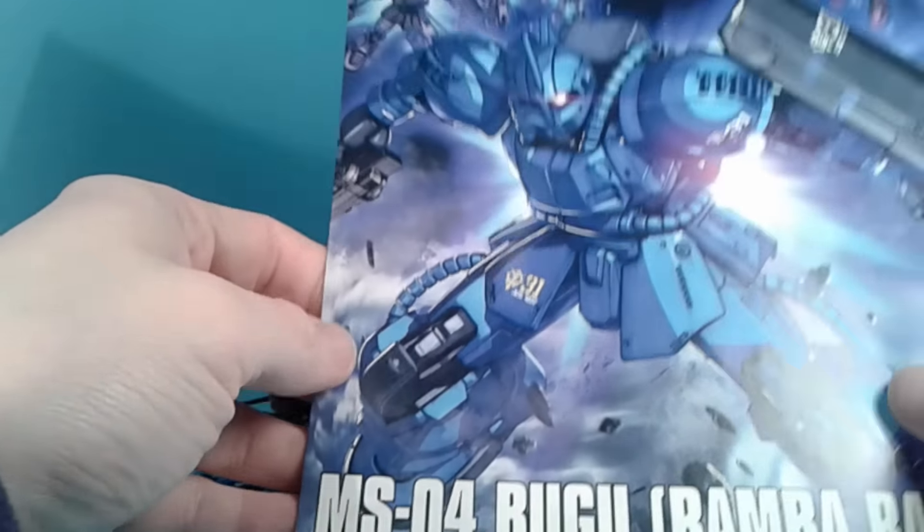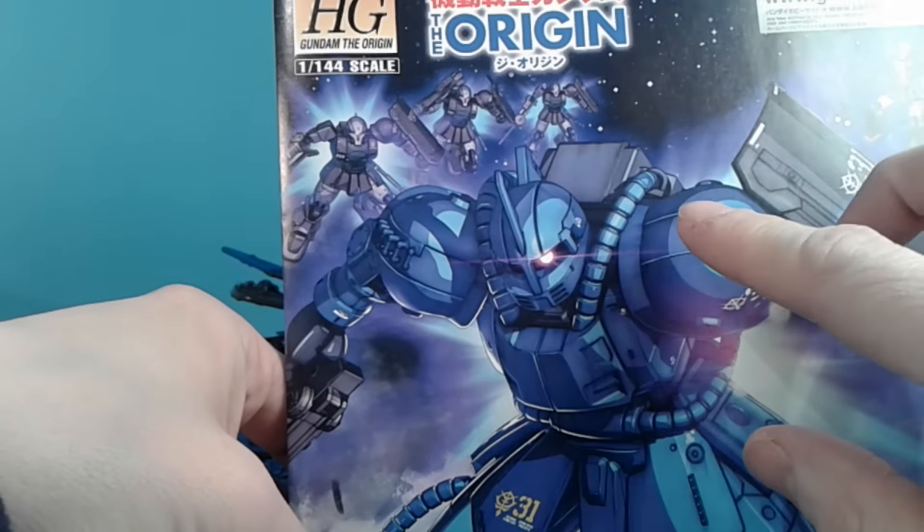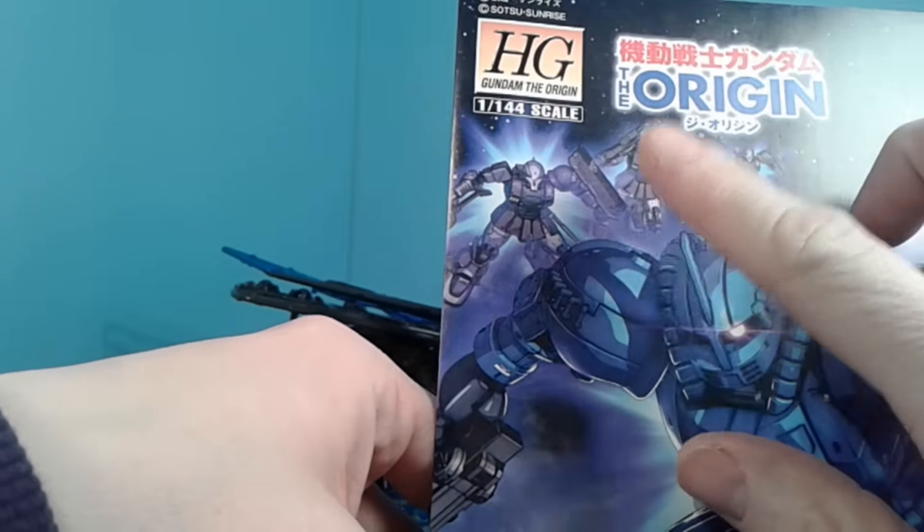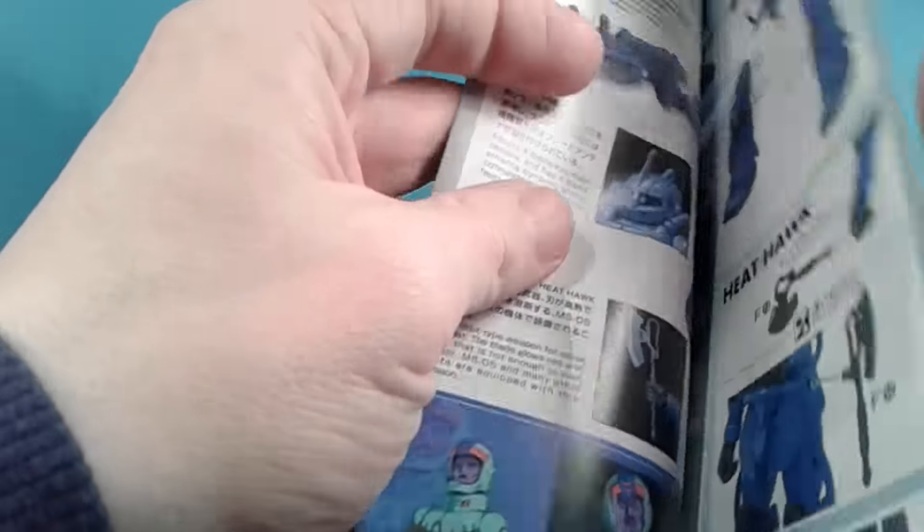And then we got the instruction manual. I think I have one of them. Well, I don't have the Zaku ones. I don't think they have them yet for the Black Tri-Stars. I don't think so. Anyways, maybe they will. Maybe they'll be P-Bandai. Maybe I don't care.